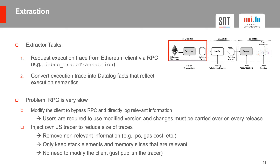We decided to go for a different option. Instead, we inject our own JavaScript-based tracer into the client. This tracer improves the speed of RPC by limiting the amount of returned information. For example, we remove non-relevant information such as the program counter or gas cost, and we only keep stack elements and memory slices that are relevant to a particular instruction. This approach does not require us to modify the client.